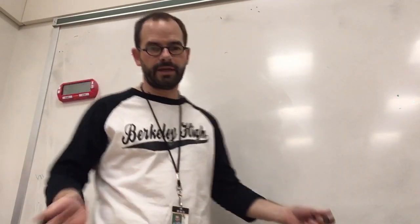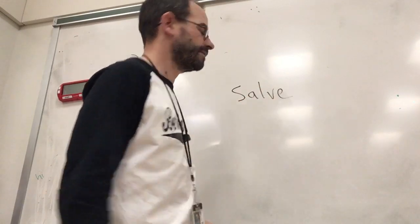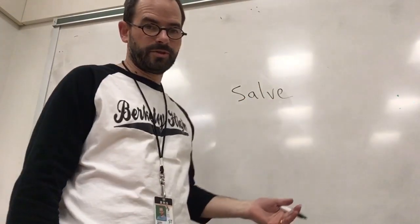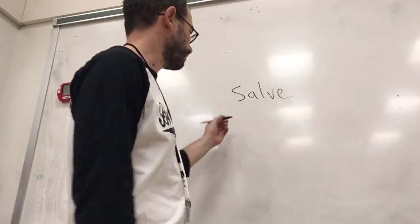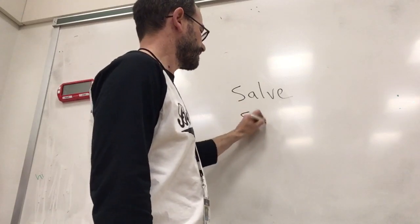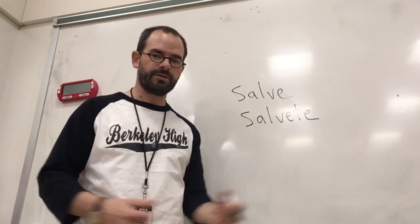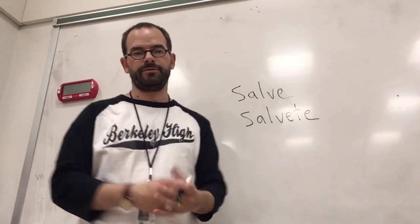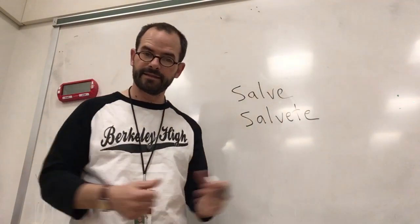Obviously you're going to want to greet people. The way you greet one person is: 'Salve.' Salve — hello, greetings. If you're talking to more than one person, like a group, you say: 'Salvete.' So you go to someone: 'Salve.' Or to a group: 'Salvete.' And if you're in a group but addressing one person, you're not going to say 'Salvete' — you look at that person and say 'Salve.'